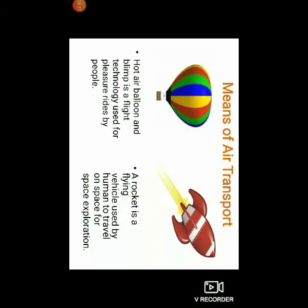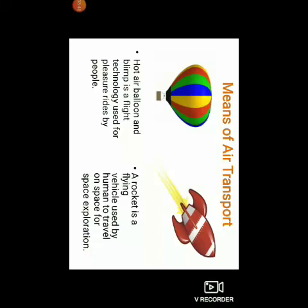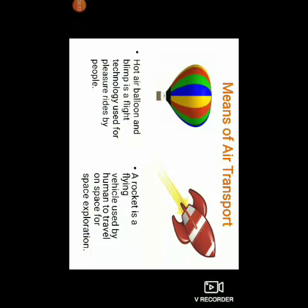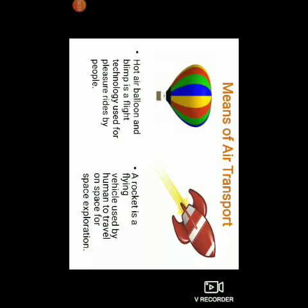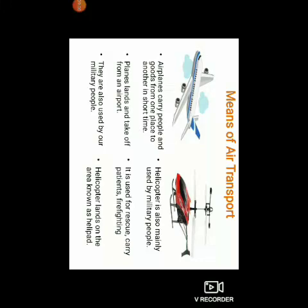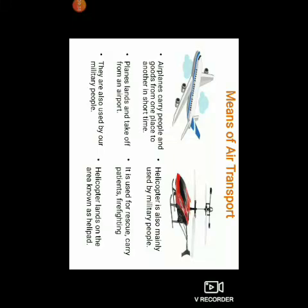Now let us look at the means of air transport. The first picture is a hot air balloon. Hot air balloons and blimps are flight technology used for pleasure rides by people. The second picture is of a rocket — a rocket is a flying vehicle used by humans to travel in space for space exploration. Airplanes carry people and goods from one place to another in a short time. Planes land and take off from an airport. They are also used by our military people. The next picture is of a helicopter, which is also mainly used by military people.